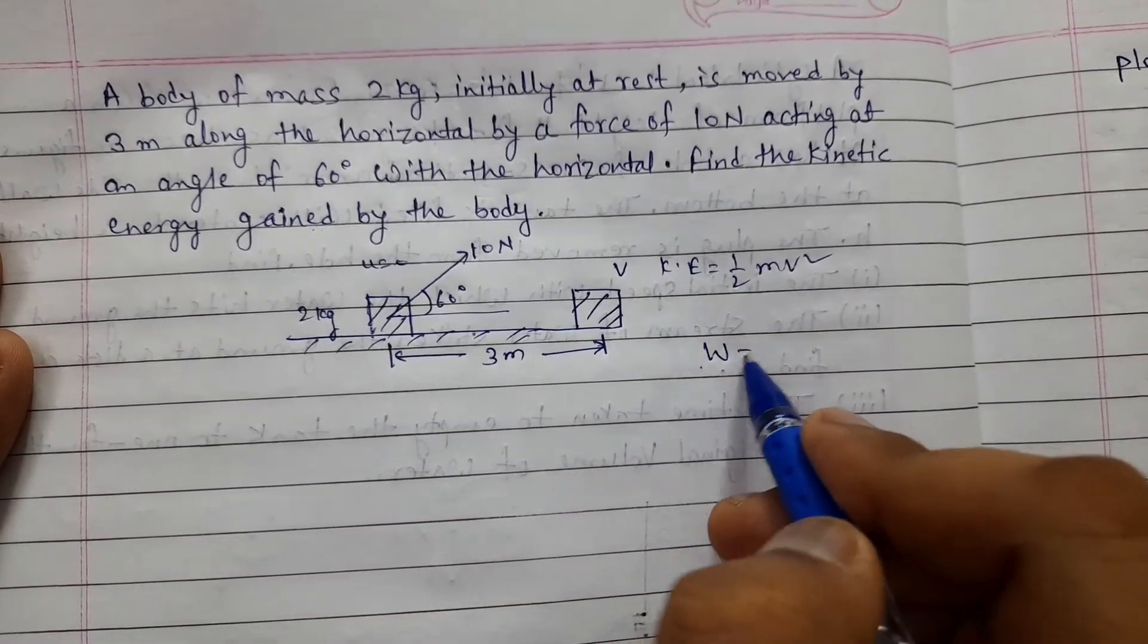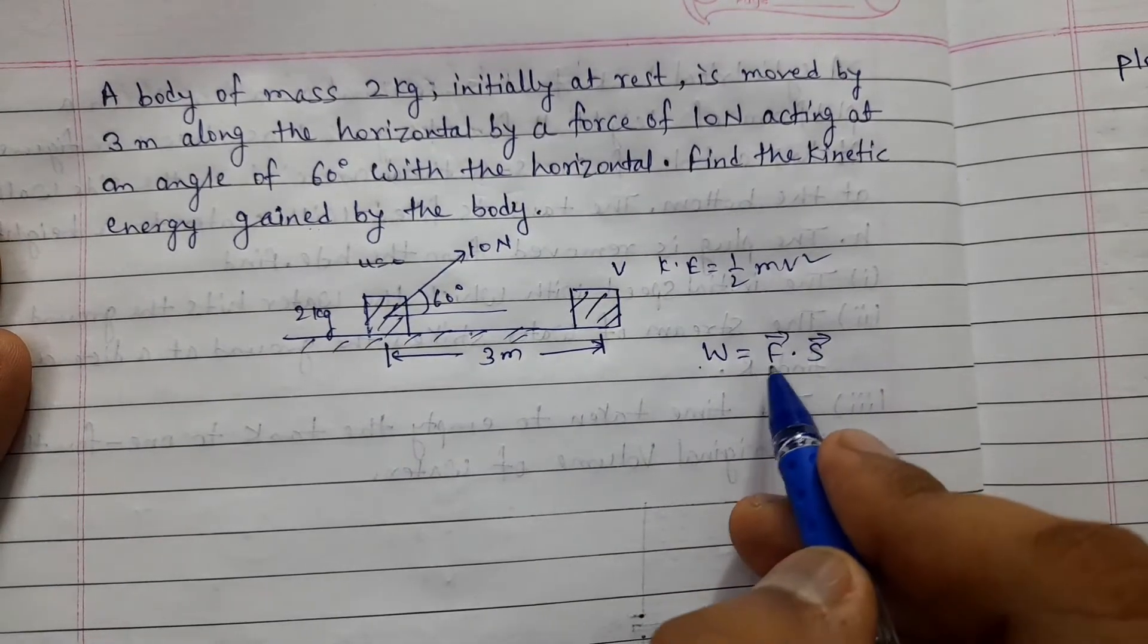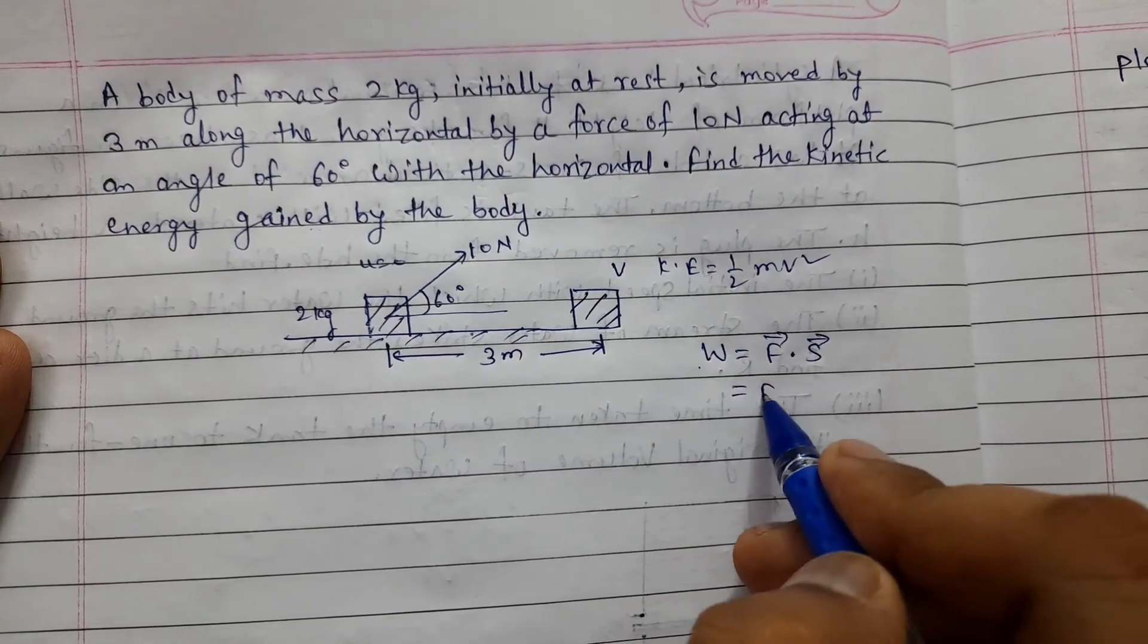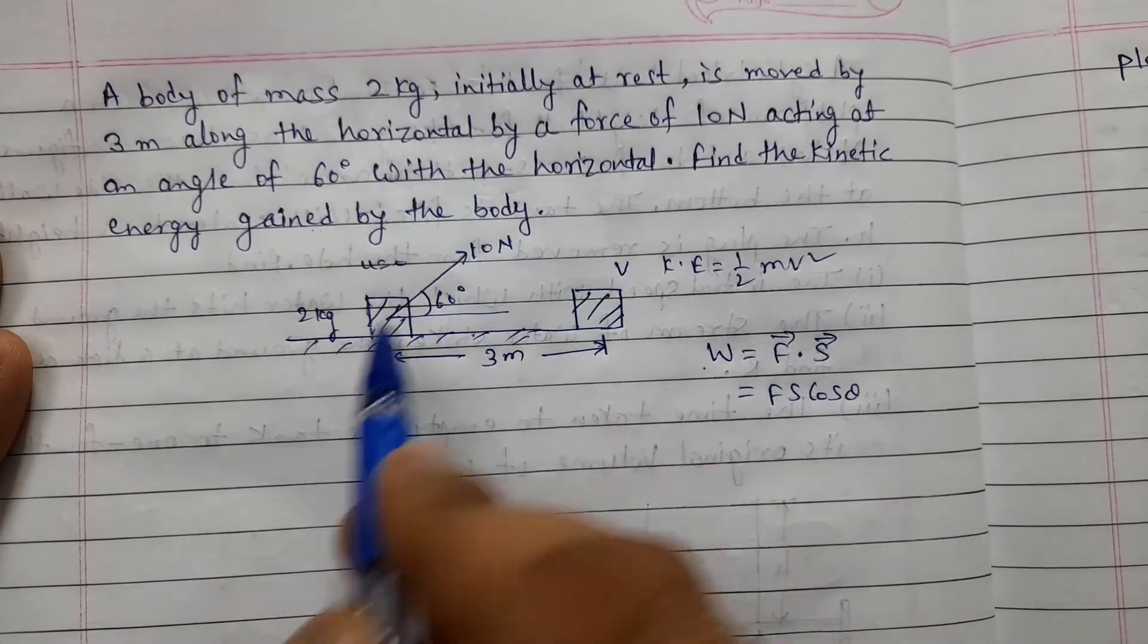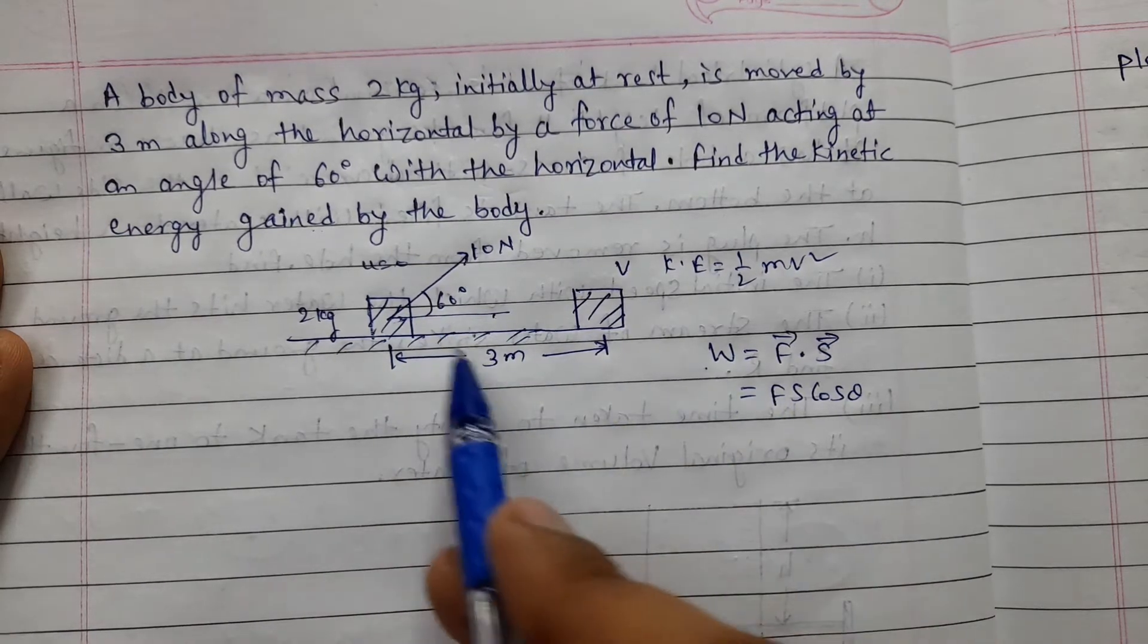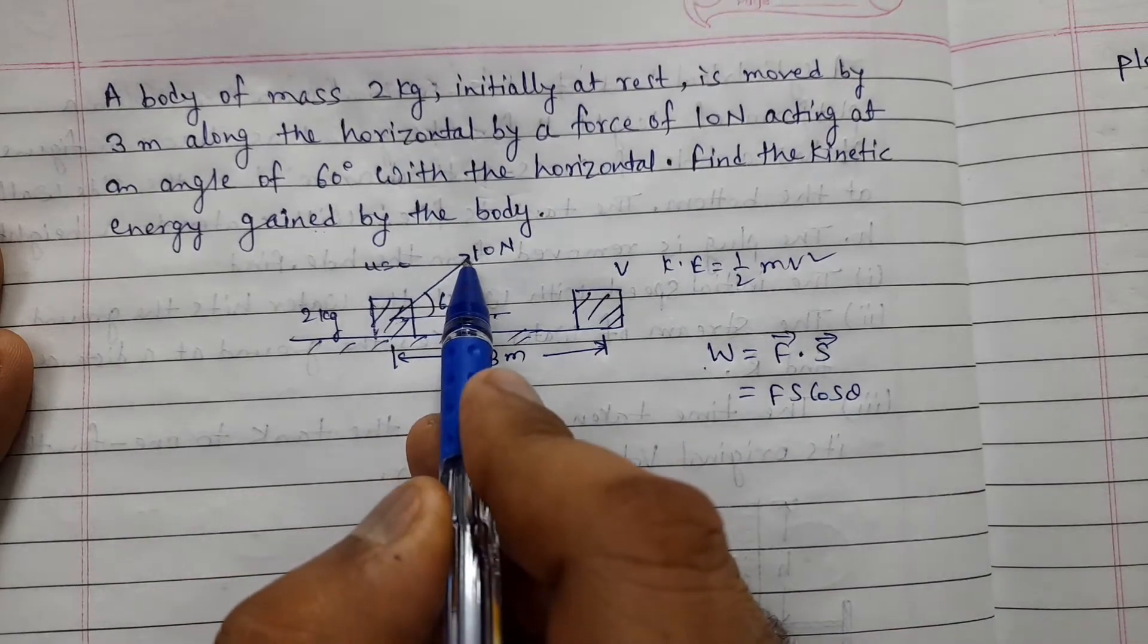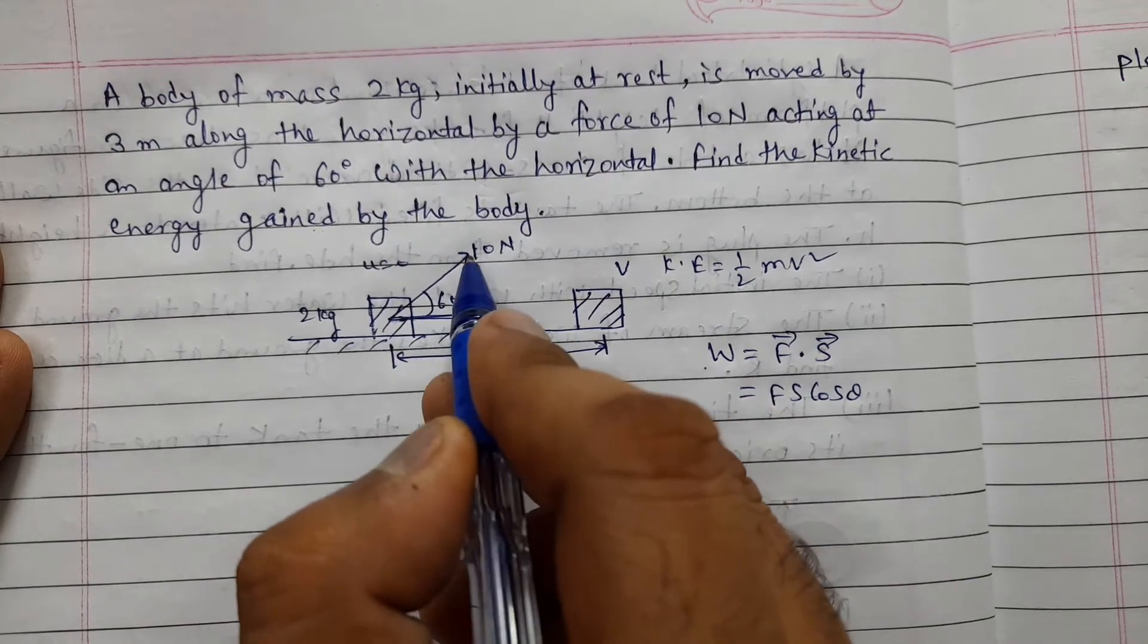Work done, that is equal to F dot S. Work is scalar quantity, but force and displacement is vector quantity. So, this is F S cos theta. Here we have two ways to look at force component in the displacement direction.